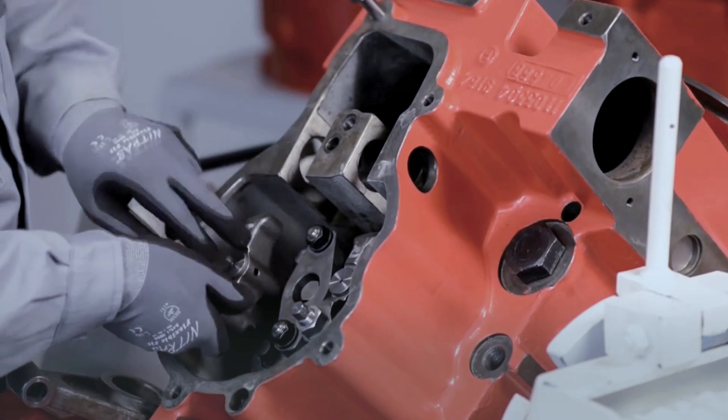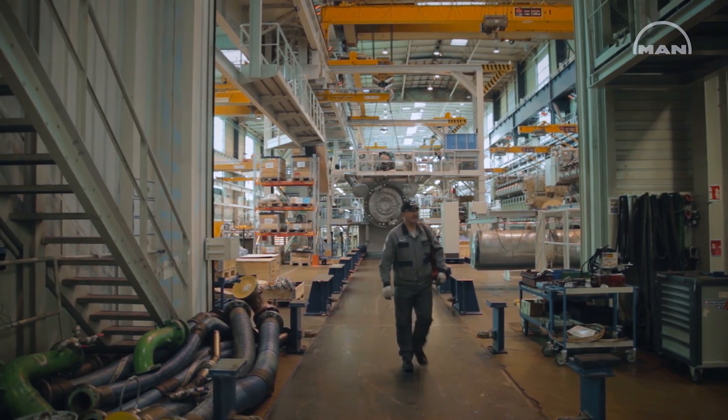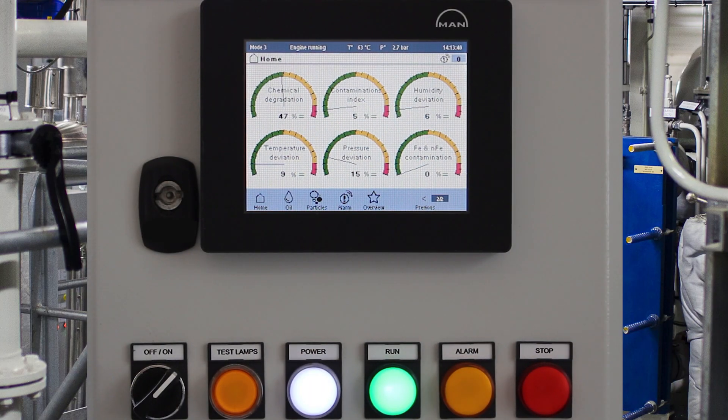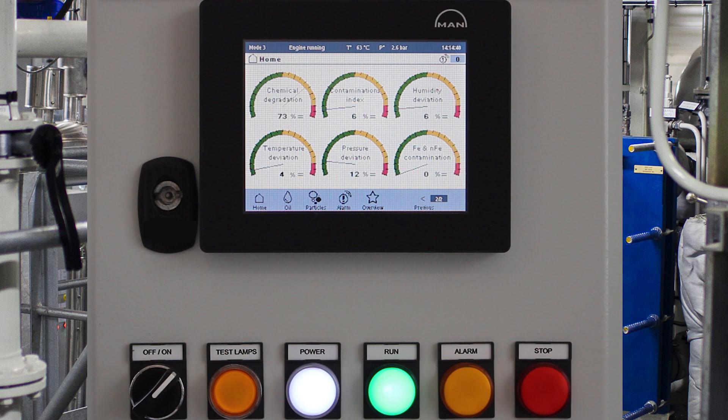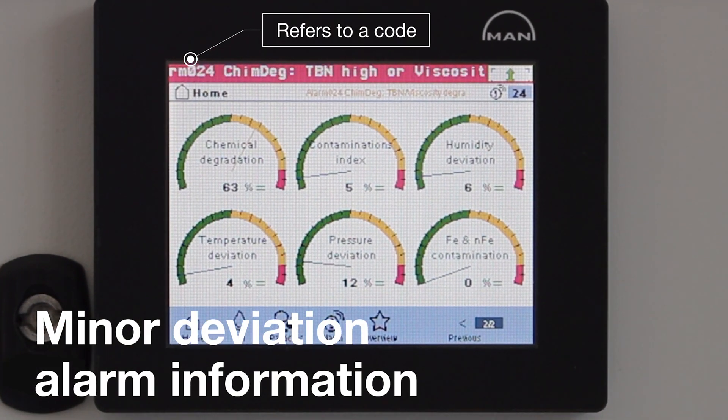You can immediately perform corrective or preventive actions to avoid major failures and keep the engine available. Let's set the MAN fluid monitor into action right away. A deviation is detected, the alarm comes on in less than three seconds.